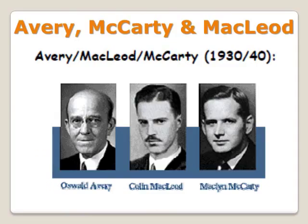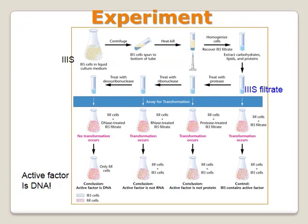Avery, McCarty, and McLeod at Rockefeller University took over and refined Griffith's experiment. They heat-killed the smooth strain of Streptococcus pneumoniae, isolated the extract, and mixed it with the rough bacteria, observing transformation of rough into smooth colonies. They then subjected the homogenate to protease to remove all proteins, and found it still had the ability to transform rough into smooth — so it was not protein. When they added ribonuclease to remove RNA from the extract and mixed it with rough bacteria, transformation still occurred — so it was not RNA.